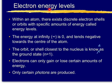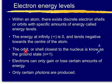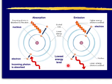Electron energy levels. Within an atom there exist discrete electron shells or orbits with specific amounts of energy called energy levels. The energy at infinity is zero and tends negative towards the centre of the atom. The orbit or shell closest to the nucleus is known as the ground state, N=1. Electrons can only gain or lose certain specific amounts of energy, so only certain photons are produced.